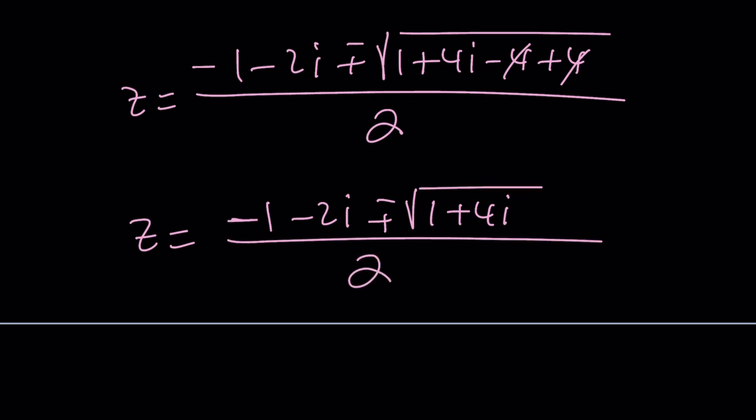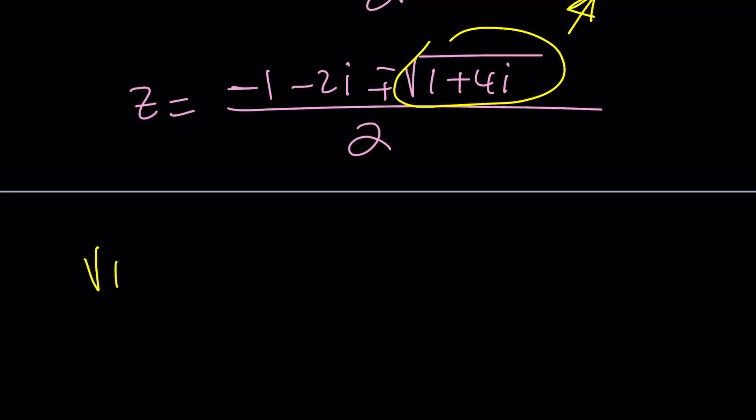So z becomes negative 1 minus 2i plus or minus the square root of 1 plus 4i, divided by 2. We just talked about this—the square root of a complex number. If you haven't seen that video, check it out because I made a video about the square root of a complex number in general. By using that formula I can immediately find the square root of this number, but if you find one the other is just the opposite.